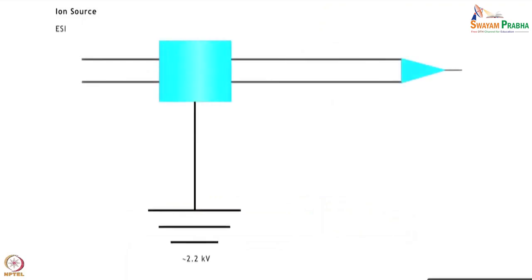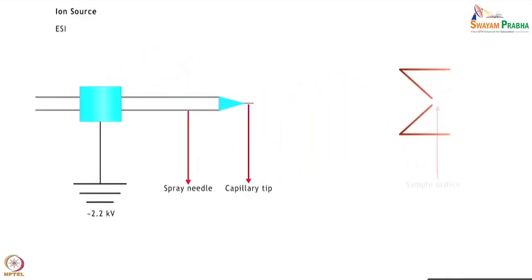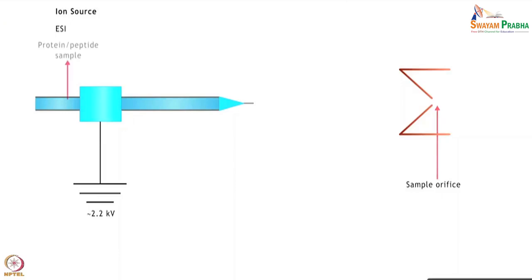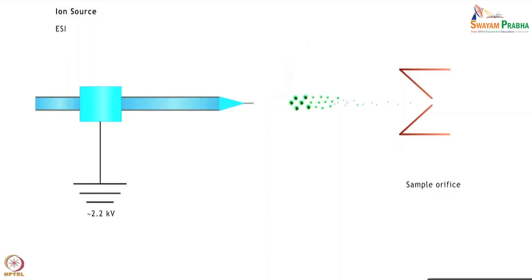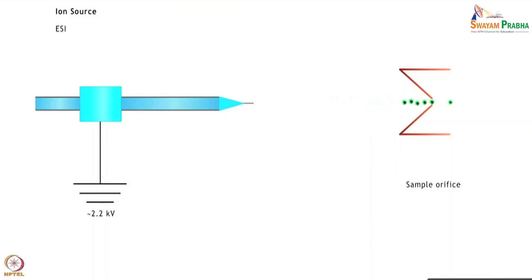In ESI, the sample is present in liquid form and ions are created by spraying a dilute solution of the analyte at atmospheric pressure from the tip of a fine metal capillary, creating a mist of droplets. These ions are then accelerated towards the mass analyzer depending upon their mass and charge.